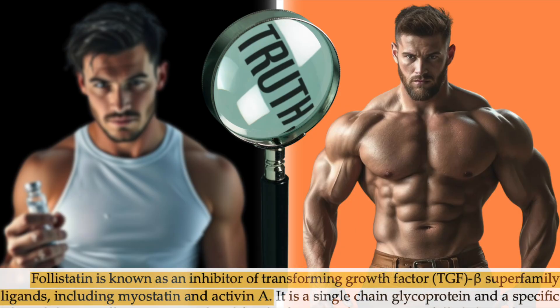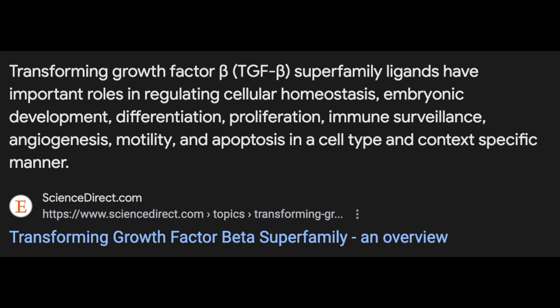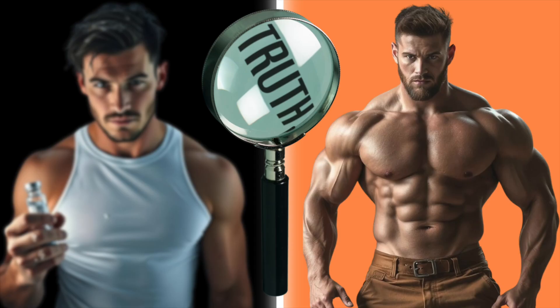Endogenous follistatin is a single-chain glycoprotein known to inhibit the transforming growth factor beta superfamily ligands. Although initially isolated from the ovarian follicle in the late 80s and found to inhibit follicle-stimulating hormone, it's been found to be expressed in various tissue types. The TGF-beta family signaling pathway is involved in many different processes determining the fate of stem cells, parts of development, components of immunity, and even certain disease processes. But for the purpose of the video, it's worth jumping straight into the synthetic protein products, the things that people inject.